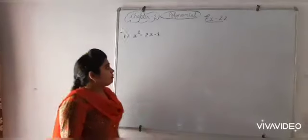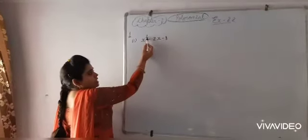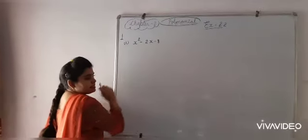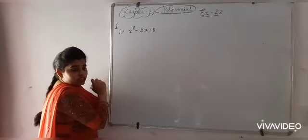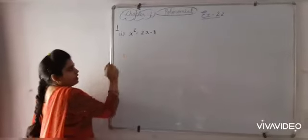Exercise 2.2, question number 1, first part. x square minus 2x minus 8. It is given and we have to find its zeros and also verify it.